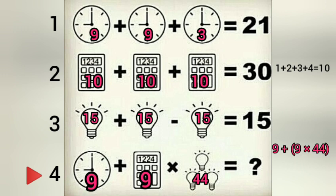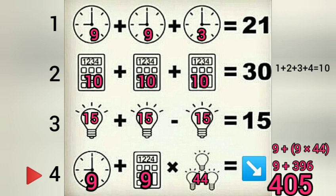Now 9 multiplied by 44. So 9 multiplied by 44 is 396. Because first of all, we multiply, the answer is 405.